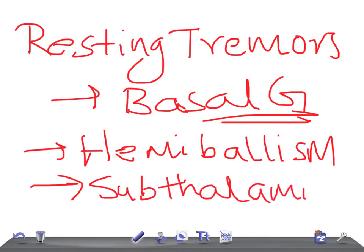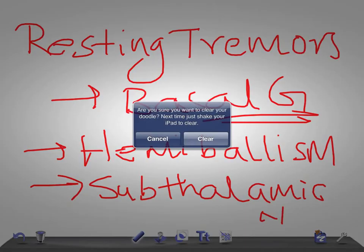Where do you see hemibalismus? It's the subthalamic nucleus. If there is any lesion in the subthalamic nucleus, you can find hemibalismus.